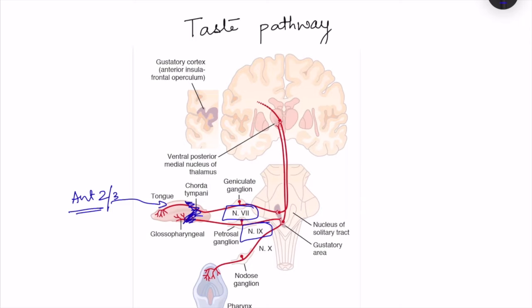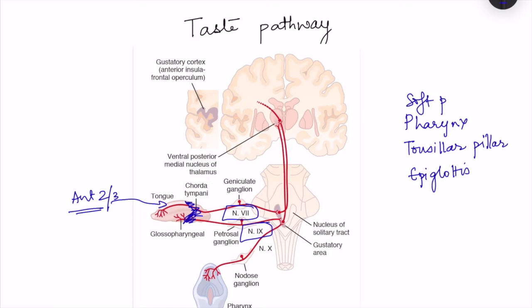Taste buds are also present on the pharynx, on the tonsillar pillars, on the epiglottis, and on the soft palate. From these areas, it is the tenth cranial nerve that carries taste sensation. So three nerves are involved: the seventh from the anterior two-thirds, the ninth from the posterior one-third, and the tenth from the posterior-most part.